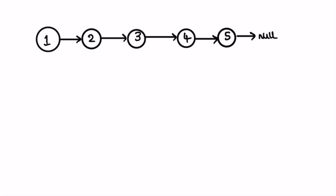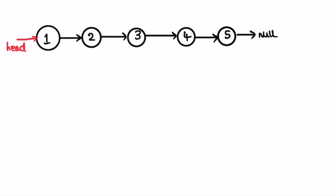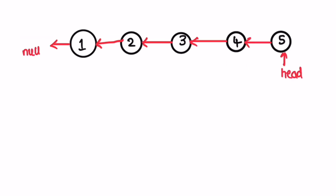Here's the linked list given to us — the head points to the first node and the last node points to none. The main idea to solve any linked list question is that we don't have to build a new linked list; we only have to play with the connections between the nodes. So instead of building a new list, we just reverse the connections. After reversing, we point the head to the last node, and we initially create a null node at the beginning.